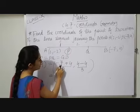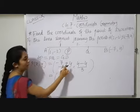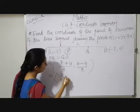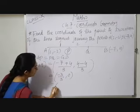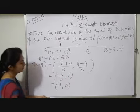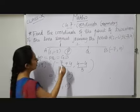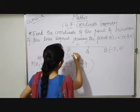You can find -7 plus 4 will be -3 by 3. 4 minus 4 will be 0. So it will be -1 comma 0. So here your P coordinate is -1 comma 0.